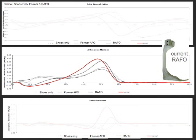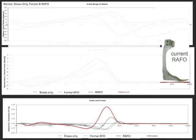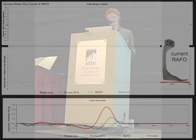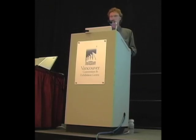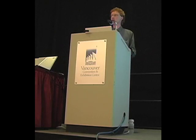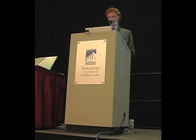If we focus now on the powers, we'll notice that you can get away from the shoes-only and former AFO condition, because there actually is some ability of the current AFO to return some of the mechanical energy that has been stored earlier in the gait cycle. There was no significant difference at the knee or the hip of the patient, regardless of whether you're looking at the shoes-only, the former AFOs, or the current AFO — and that's an important point.